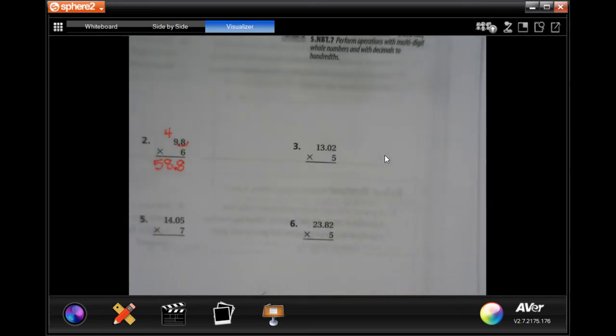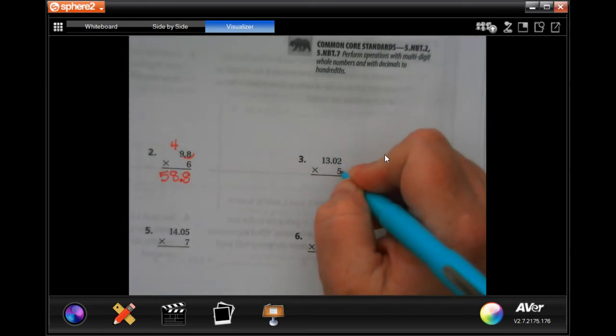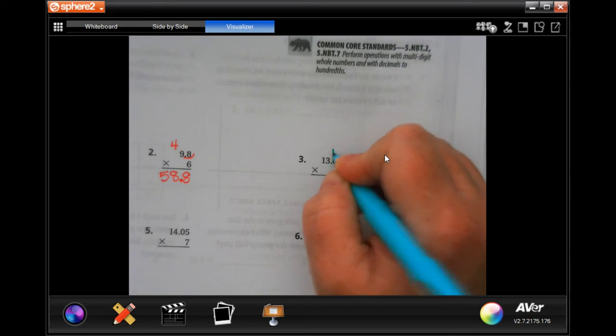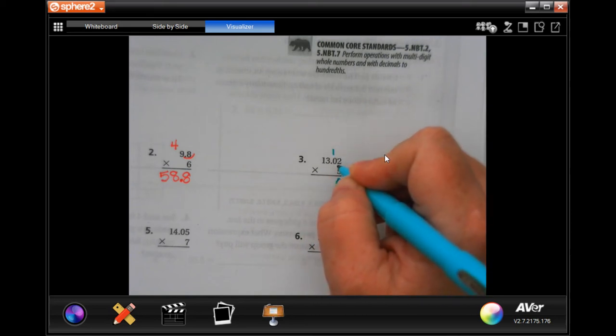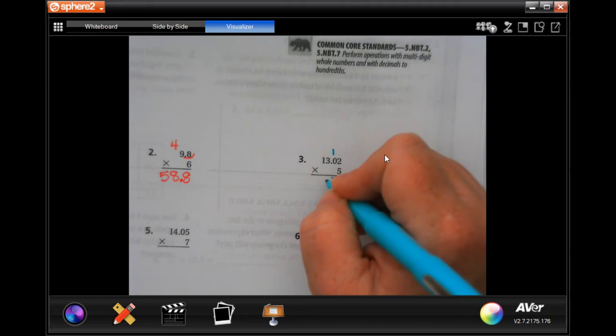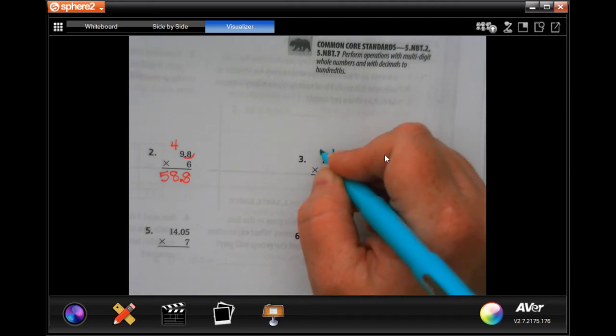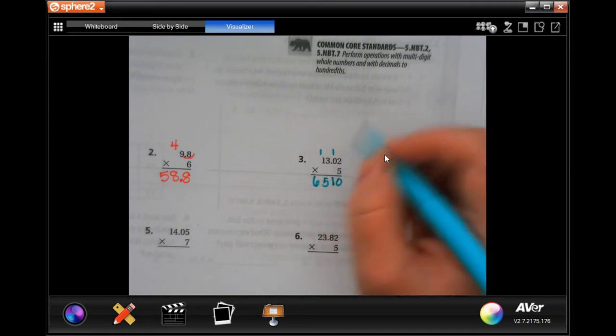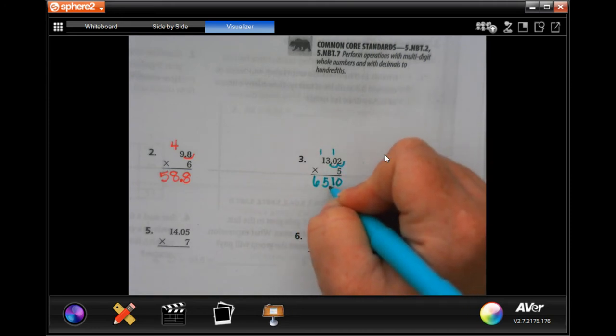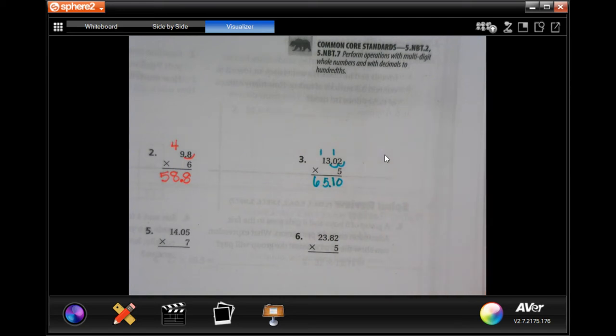All right, let's do number two. Five times two is 10, carry our one. Five times zero is zero, plus one is one. Five times three is 15, carry that one, and five times one is five, plus one more is six. Now, on this one, there's two places behind the decimal, so we're going to go in one, two places and put our decimal in.